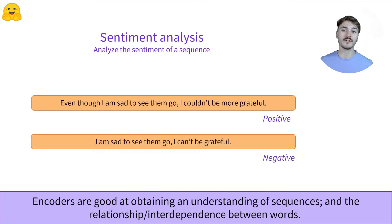As mentioned earlier, encoders are good at doing sequence classification. Sentiment analysis is an example of sequence classification. The model's aim is to identify the sentiment of a sequence. It can range from giving a sequence a rating from 1 to 5 stars if doing review analysis, to giving a positive or negative rating to a sequence, which is what is shown here.